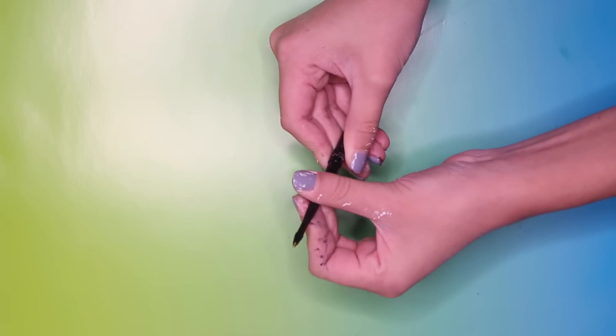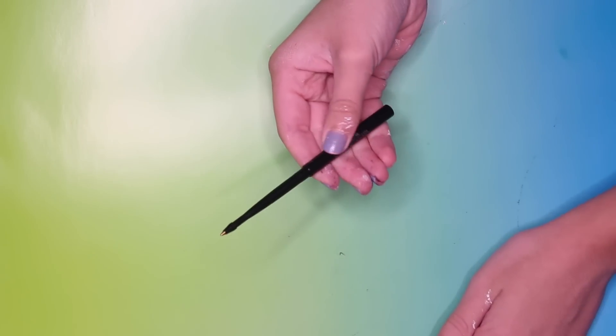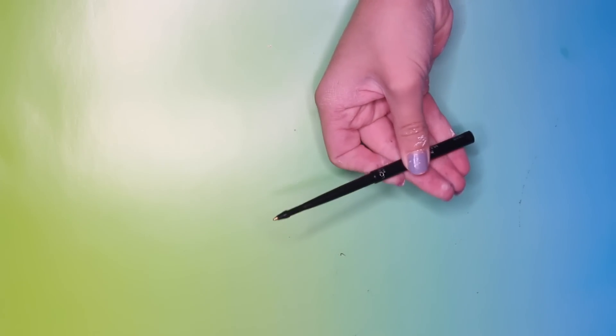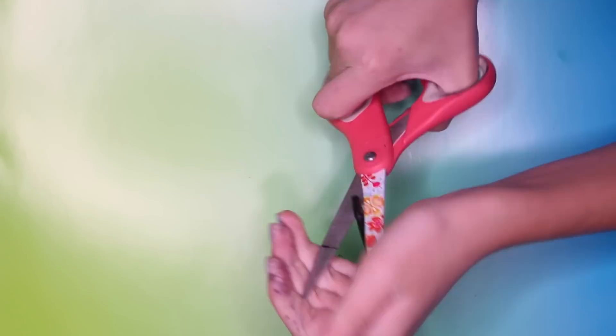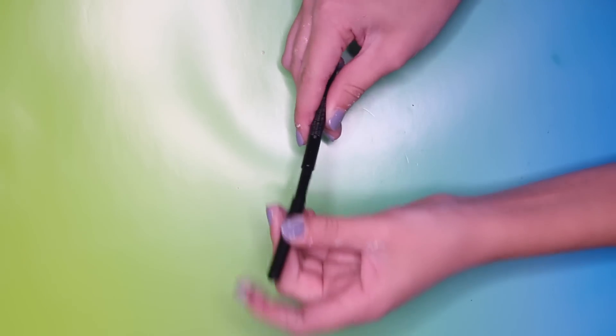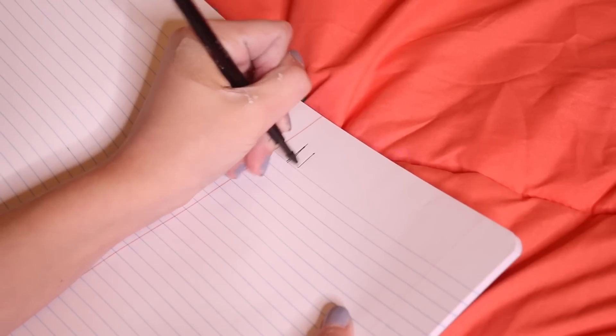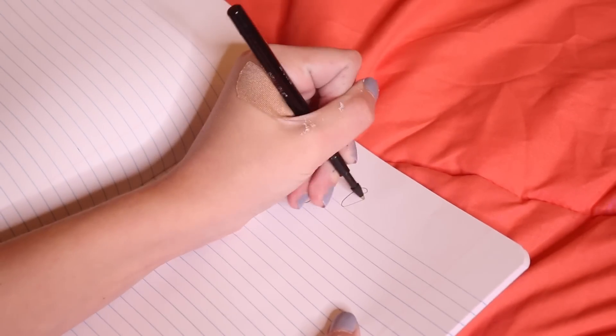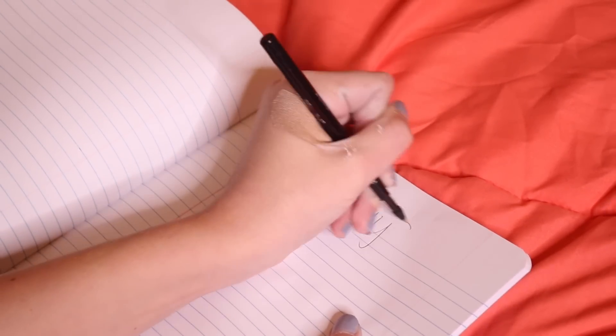And once I had that adjusted, the lid still wouldn't go on the eyeliner because of the extra pen tip. So then I took out the ink cartridge and I actually trimmed the eyeliner itself. And then once I had that trimmed, I put the ink cartridge back into the eyeliner and the lid fit on perfectly. And then there you have it. Something that looks like an eyeliner, but it's actually a pen. And it's super cool.